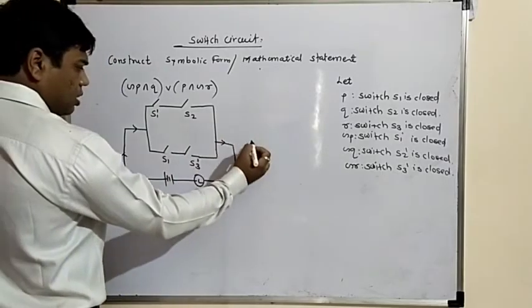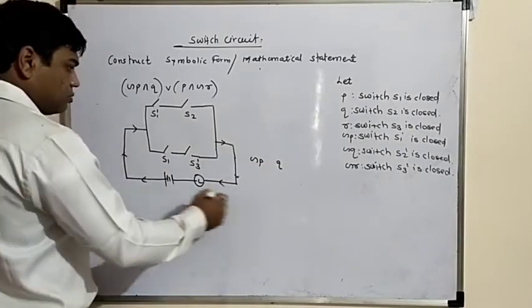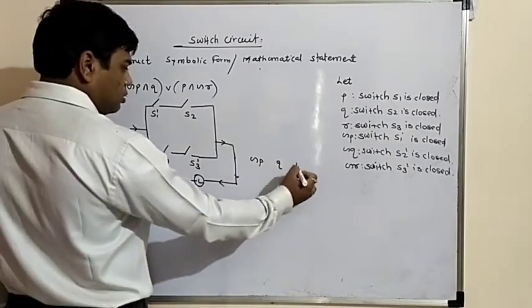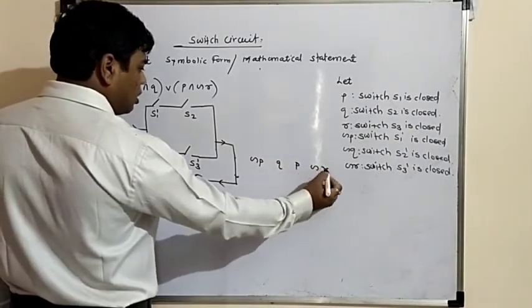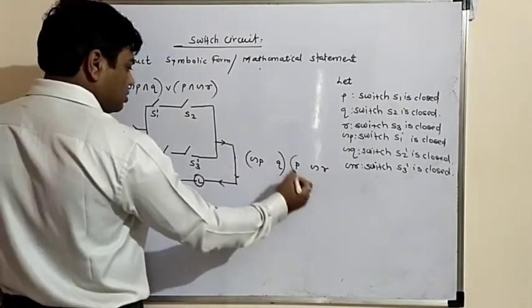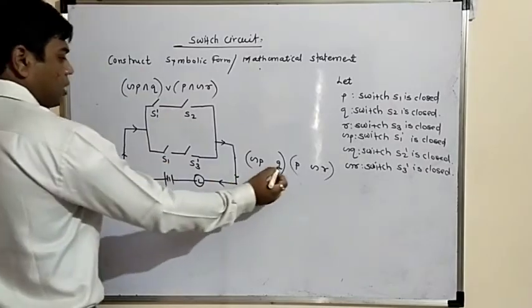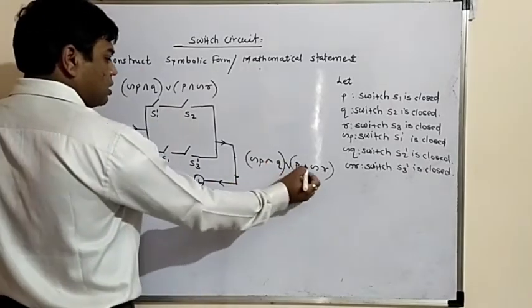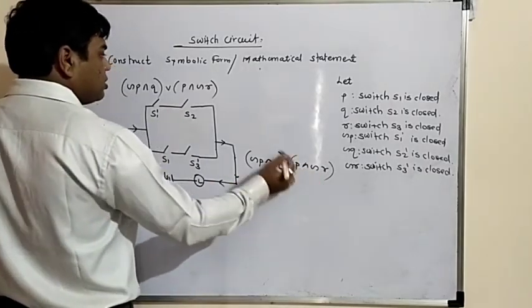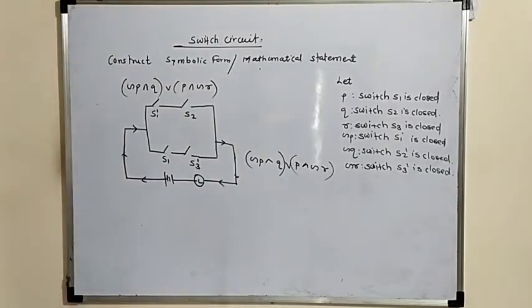S1 dash is negation P, S2 is Q, S1 is P, S3 dash is negation R. S1 and S2 are in this bracket; these both are in parallel, and these both are in series. We get the same statement pattern. In this way we can draw a circuit from a mathematical statement.